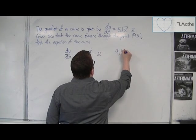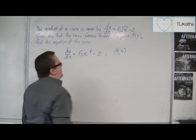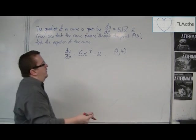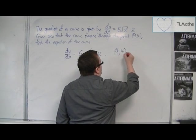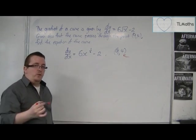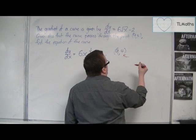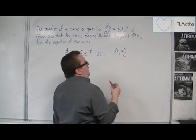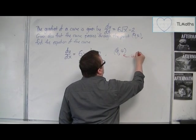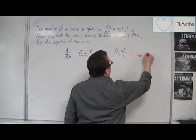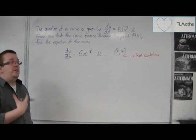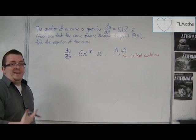We've been given some coordinates that we know the curve passes through. Now these extra bits of information are in general terms known as initial conditions or boundary conditions. They are referred to as initial conditions, usually when we're talking about time and when we have time as being 0, and hence initial.